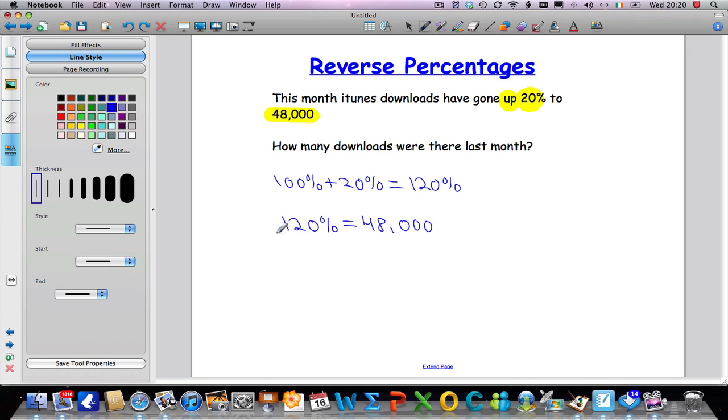And we're going to follow the same method again, the unitary method. I'm going to work out what 1% is first. And in order to work out 1%, I've got to divide by 120. So I'm going to do the exact same thing on the other side. I'm going to do 48,000 divided by 120. And 48,000 divided by 120 is going to give us 400. So I know that 1% is 400.